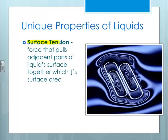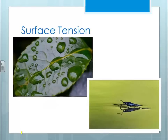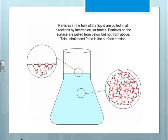There are some unique properties of liquids. The first one is surface tension — a force that pulls adjacent parts of the liquid surface together, which decreases the surface area. This is why certain things will float; if you put paper clips on top of water, they will float because of the surface tension at the surface of the water. This is also why water will form droplets, because all of the molecules on the outside of that water particle are pulled together, decreasing the surface area. This is also why some lighter organisms can walk on top of the water.